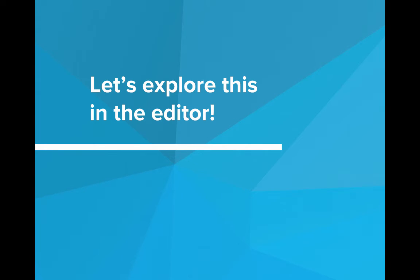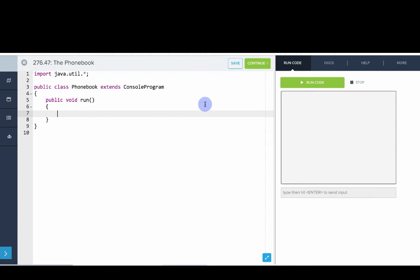So let's explore this in our editor. Okay, so let's write our phonebook program. So to start off, we'll make a hash map of strings to strings called phonebook. And it's a new hash map strings to strings. And open close parentheses.